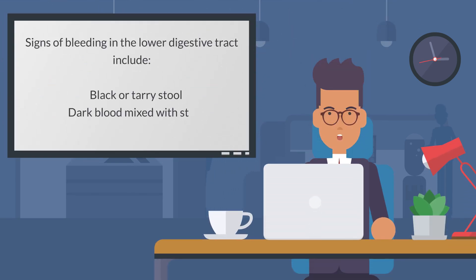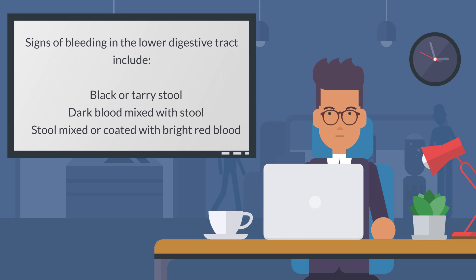Signs of bleeding in the lower digestive tract include: black or tarry stool, dark blood mixed with stool, and stool mixed or coated with bright red blood.